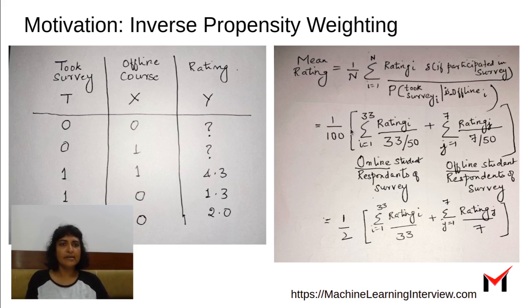divided by the probability that student i took the survey given the student is online or offline. So if it's an online student, this ratio in the denominator would be 33 by 50 because 33 of the online students out of 50 responded to the survey.